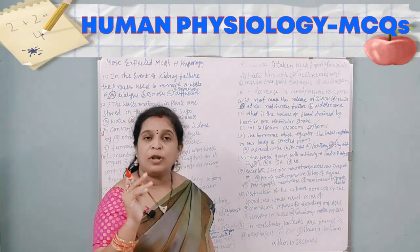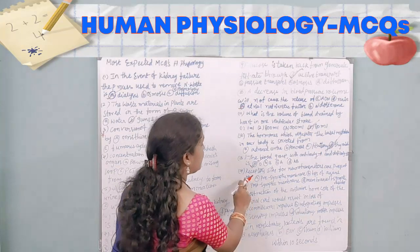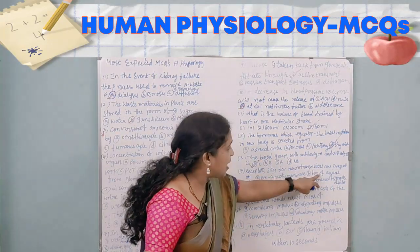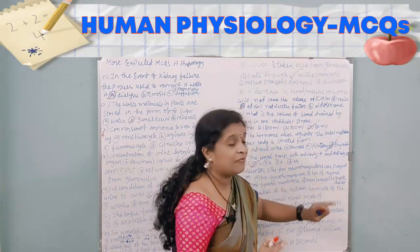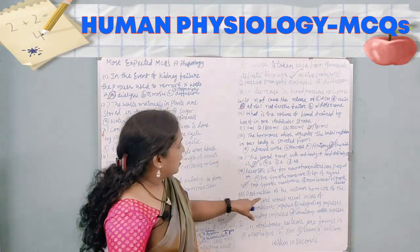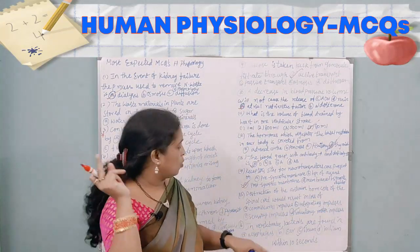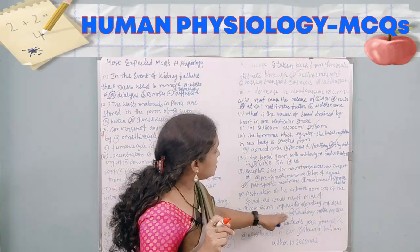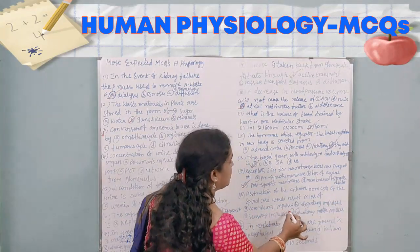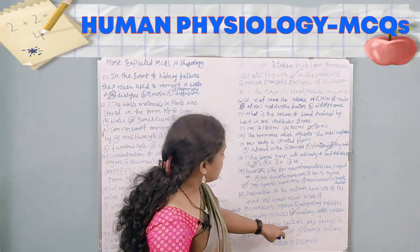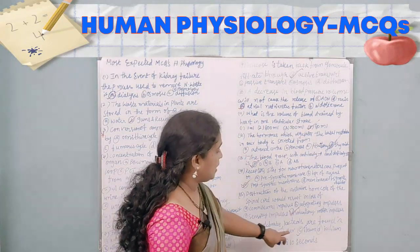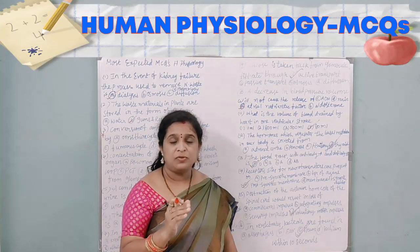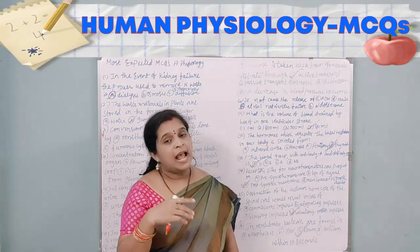The fourteenth question: receptor sites for neurotransmitters are present on — the pre-synaptic membrane, tips of axons, the post-synaptic membrane, or membranes of synaptic vesicles? The answer is the post-synaptic membrane. The fifteenth question: destruction of the anterior horn cells of the spinal cord would result in loss of — commercial impulses, integrated impulses, sensory impulses, or voluntary motor impulses? The answer is voluntary motor impulses. The sixteenth question: in vertebrates, lacteals are found in the esophagus, ear, ileum, or ischium? The answer is ileum.